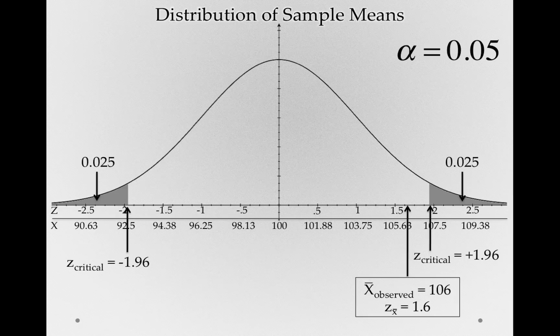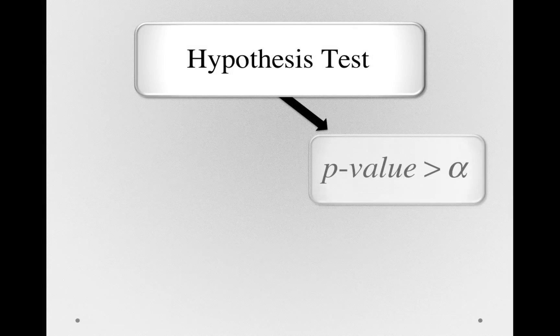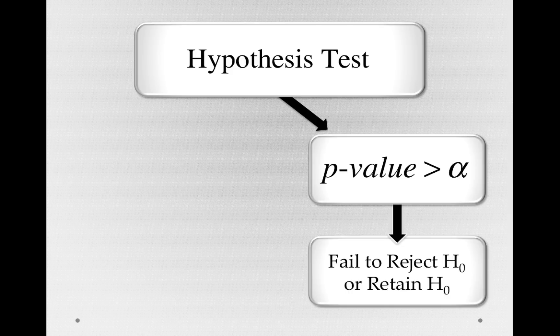So, another way we can make our decision in performing the hypothesis test is, if our p-value is greater than alpha, we will fail to reject, or in other words, retain, the null hypothesis.